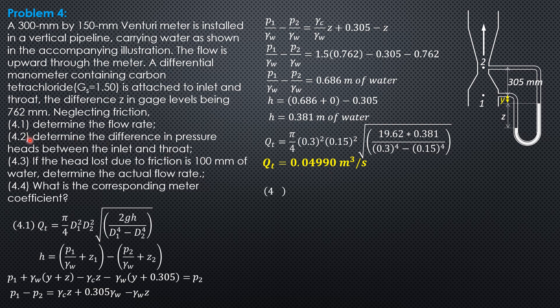Let's now proceed to 4.2. The difference in pressure heads between the inlet and throat. Actually we have already computed it. This is the answer: 0.686 meter of water.